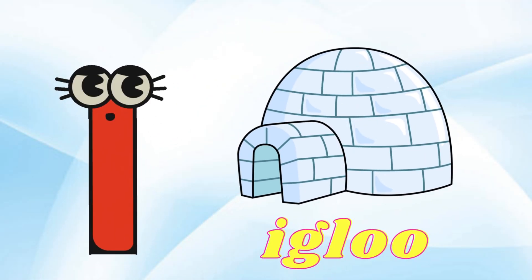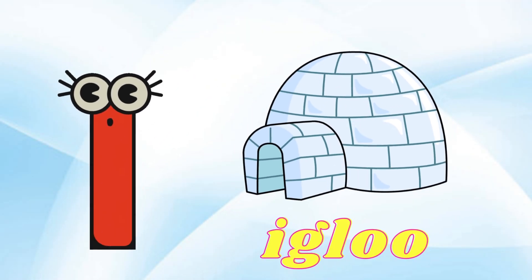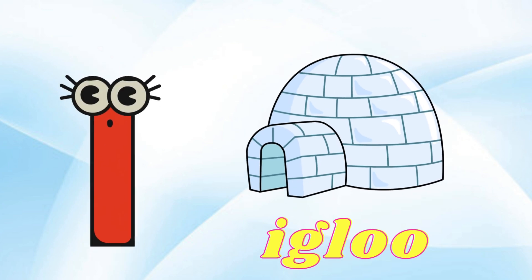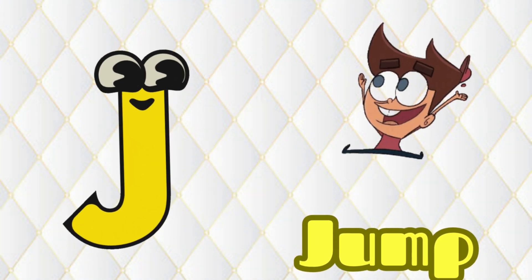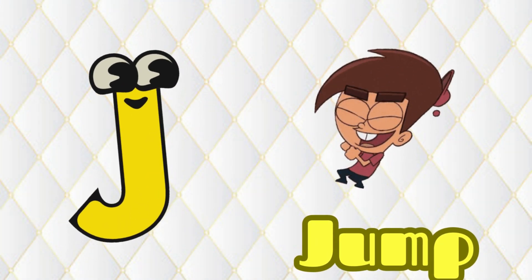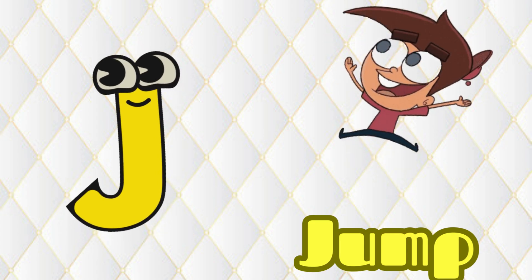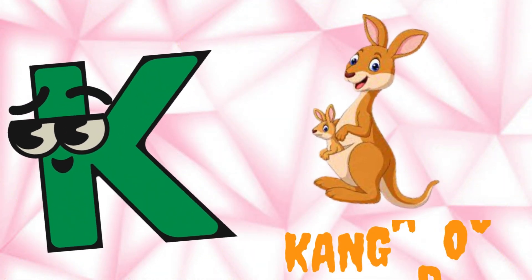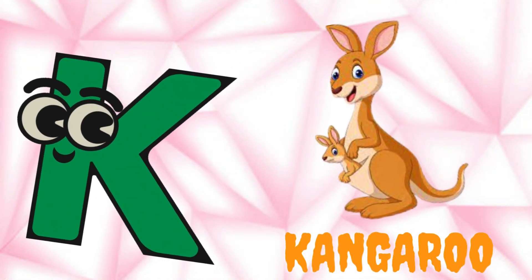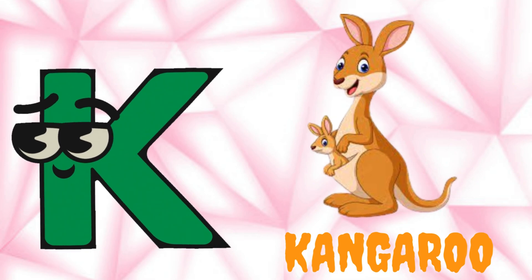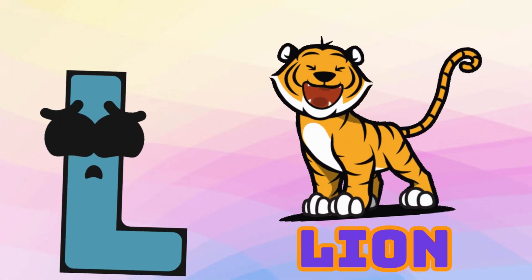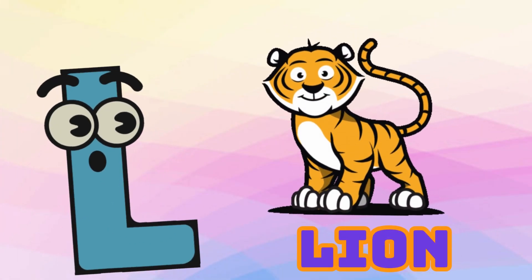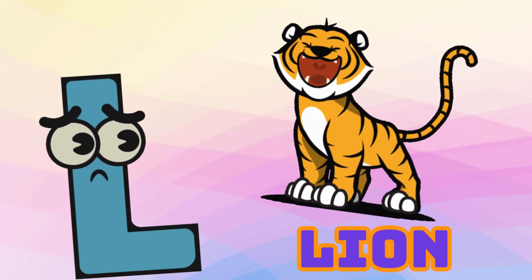I is for Igloo, I-I-Igloo. J is for Jump, J-J-Jump. K is for Kangaroo, K-K-Kangaroo. L is for Lion, L-L-Lion.